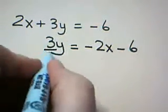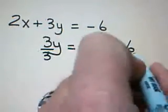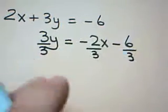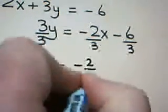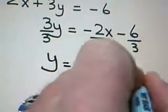Divide everything by 3, every term by 3, to keep the equation equivalent. We have y is equal to negative 2 thirds x minus 2.